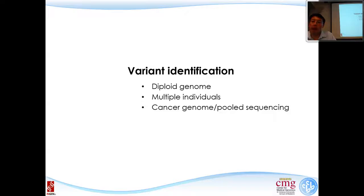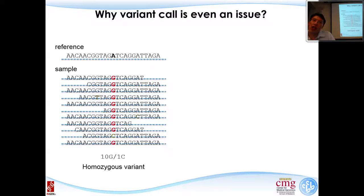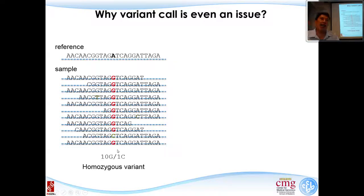Today's main topic is variant identification. So far we've discussed FASTQ files, sequence alignment, and refined alignment to ensure reads are correctly placed. The next question is: how do we call genetic variants from the aligned data? At first it seems straightforward—if all sequencing reads supporting an alternative allele differ from the reference genome, we consider it a homozygous variant.